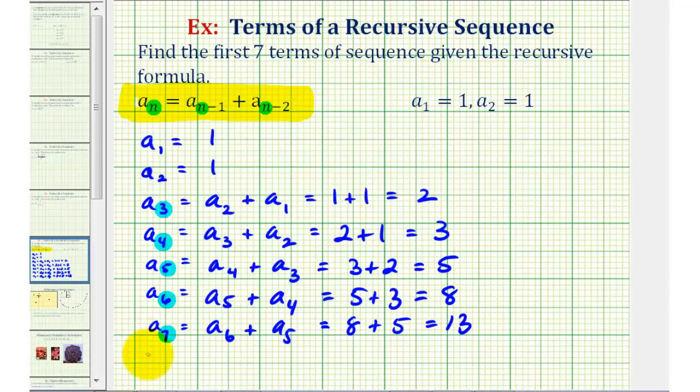Let's make this into a list. So we have one, one, two, three, five, eight, thirteen.